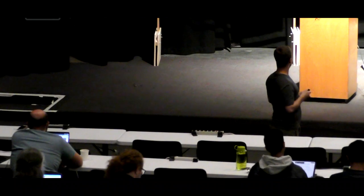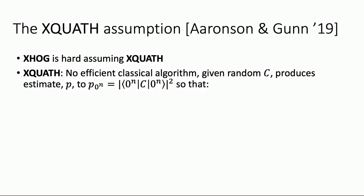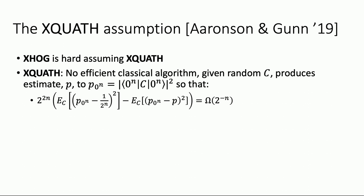There's this XQuath assumption, and there's a reduction: XHog is hard assuming XQuath is true. XQuath says there's no efficient classical algorithm that, given a random quantum circuit, produces an estimate to the output probability P0 with any meaningful advantage. It's a very customized conjecture — not something from your undergraduate complexity book. The intuition is: you're comparing two algorithms both trying to estimate the output probability P0. The first just outputs one over two to the N no matter what circuit — that's the trivial thing. The second outputs P, and we want to say no algorithm achieves a mean squared error that's too much better than the trivial one — specifically, no more than two to the minus N better.